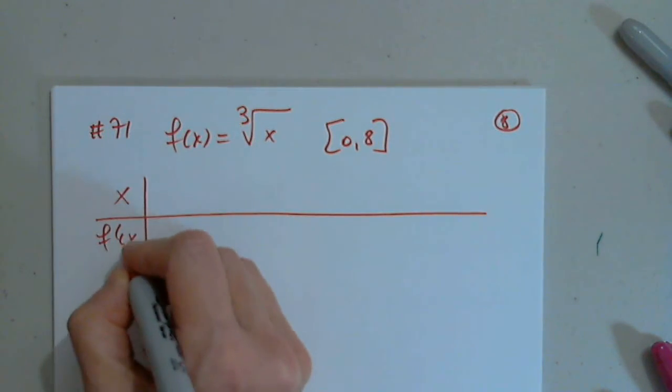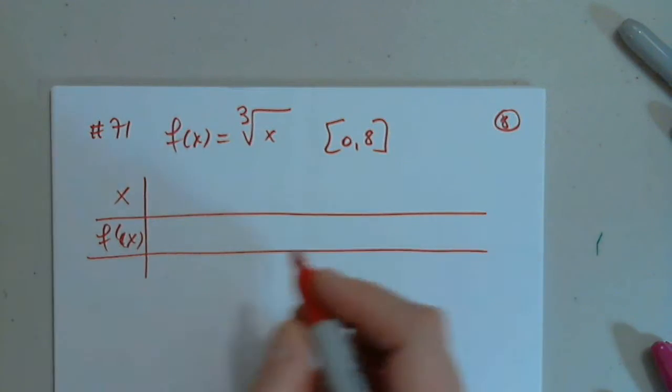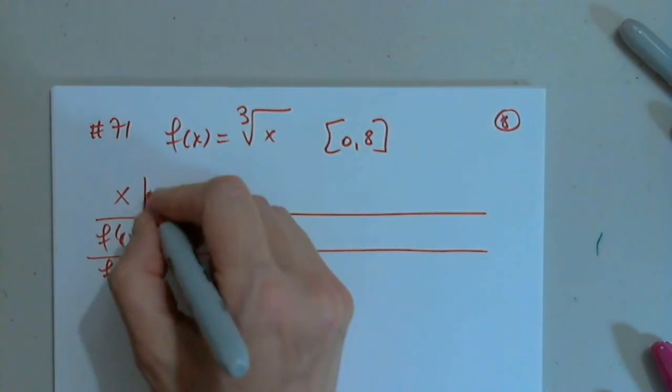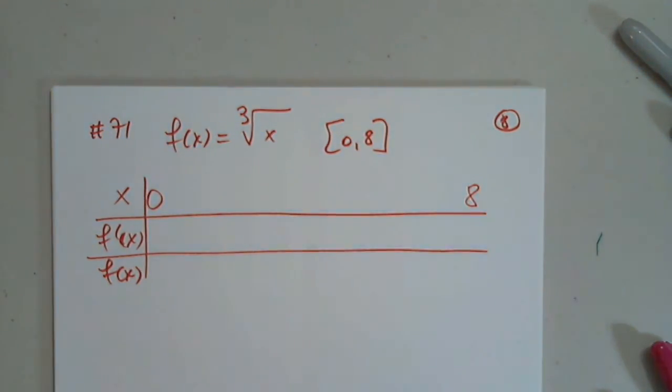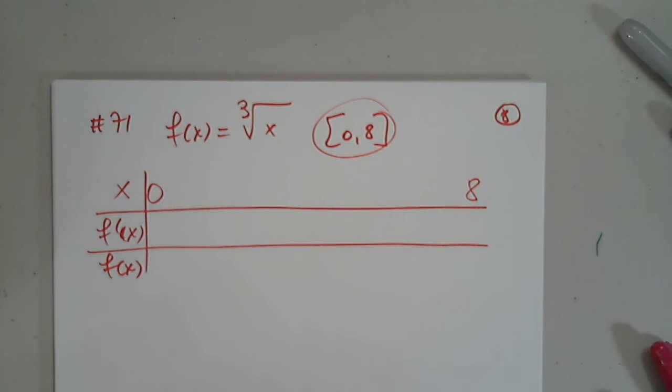All we need is f prime, f of x, 0 to 8. Nothing else. That's exactly what we are asked to study, just 0 to 8. Good.